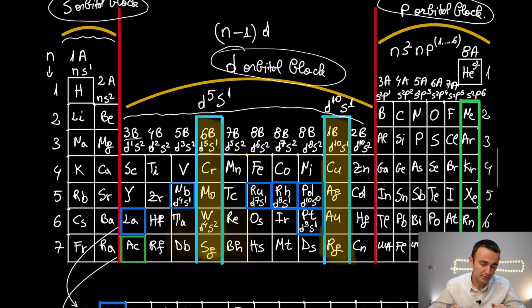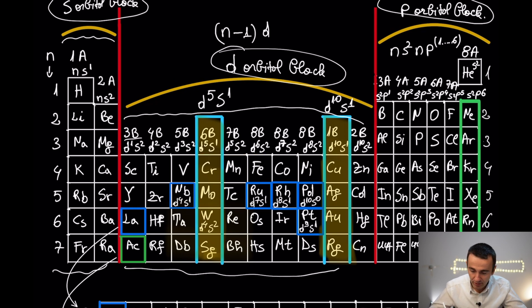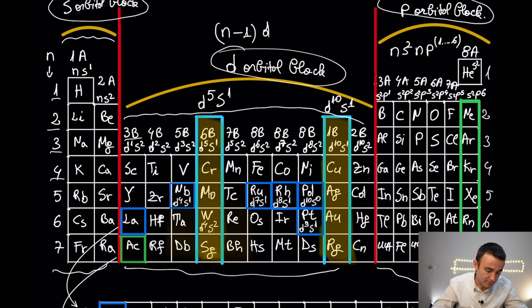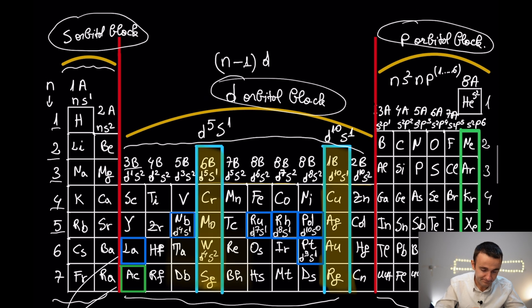We also have lanthanides and actinides that are f orbital blocks. These are the periods, which in terms of quantum numbers represent the number of the shell. We have groups A and groups B. The difference is that A groups obey strictly the law of periodicity in terms of properties of elements, but B groups have a lot of exceptions in trends related to the periodic law.